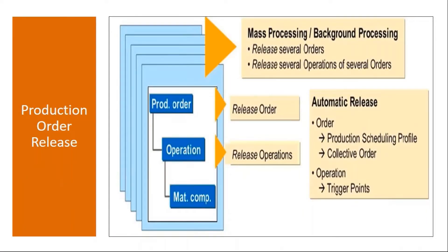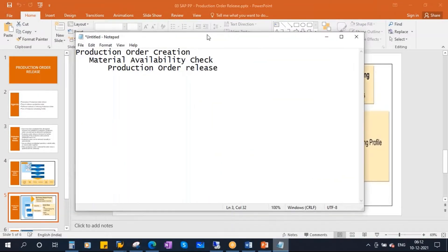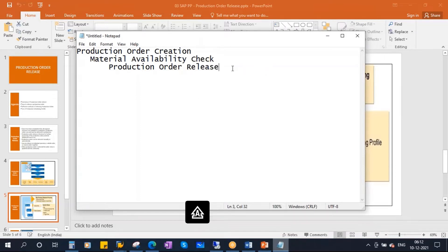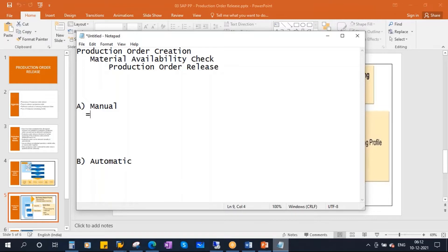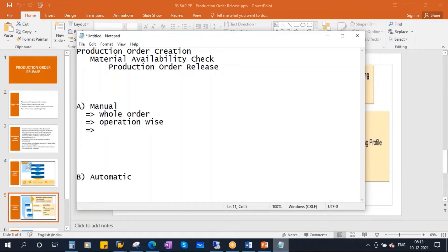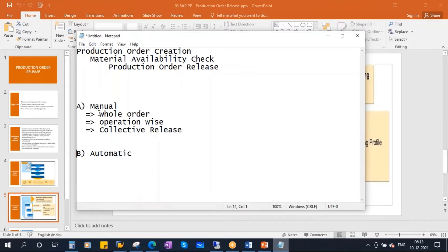Now let's look at the different methods of releasing a production order. The first is manual release. In manual, you can release one full order — the entire order. The next option is operation-wise release. And then there is collective release — releasing multiple orders together. These are the options available under manual release.